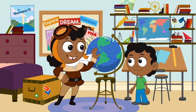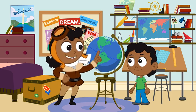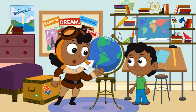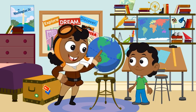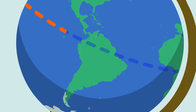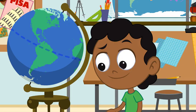Right here around the middle of the globe is the part of Earth that is warm all the time. See that line that goes all the way around the globe? That line is called the equator.